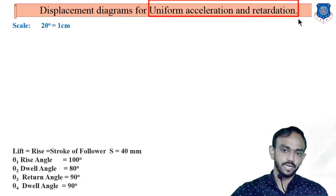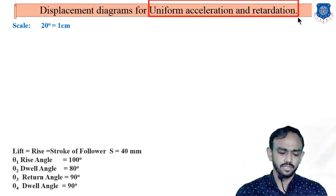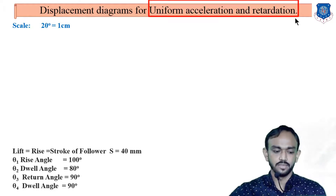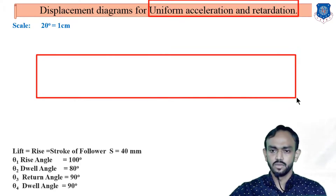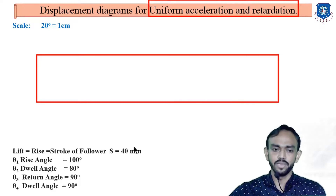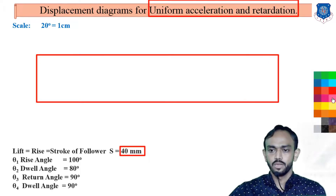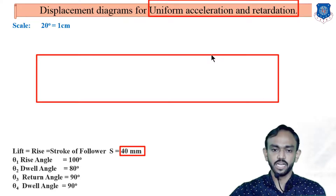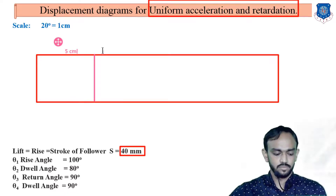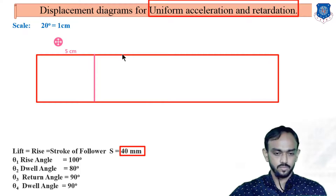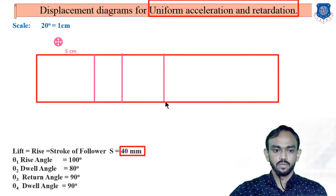Next is the uniform acceleration and retardation diagram, which is very similar to uniform velocity but more lengthy. First, you make the same rectangle of 18 cm length and 4 cm height as per the given data. There was a correction here — let me restate: same as simple harmonic motion, you make a rectangle whose length is 18 cm and height is 4 cm.